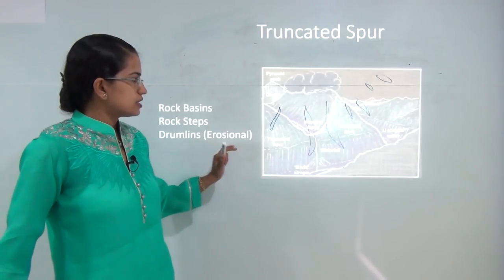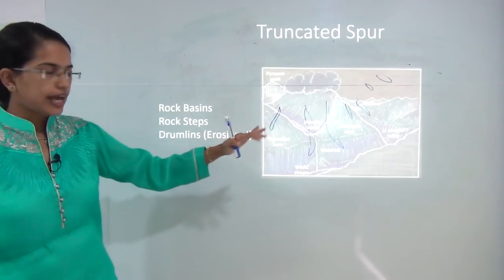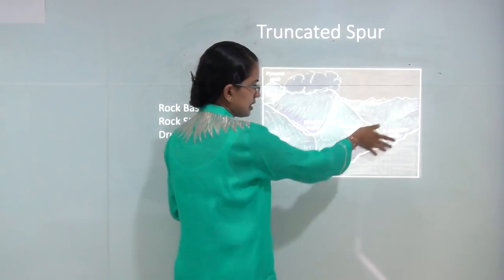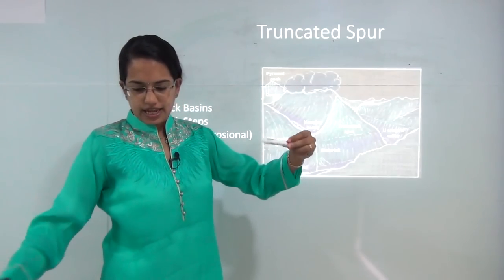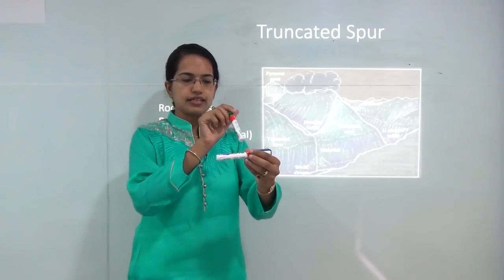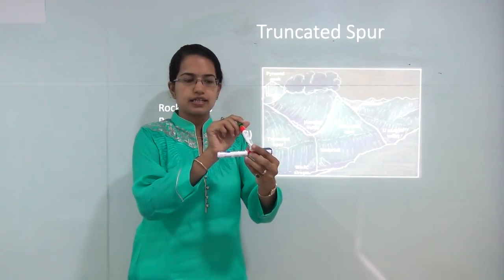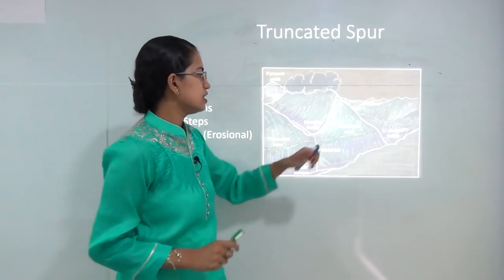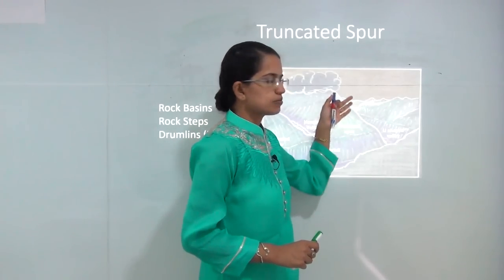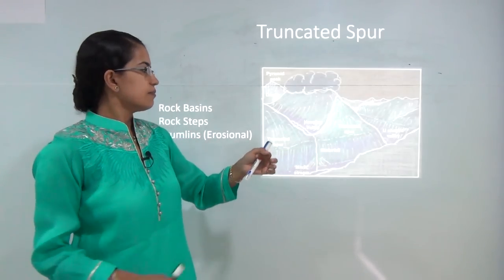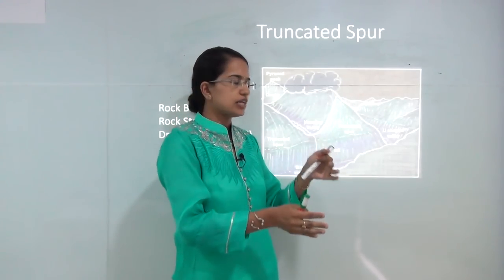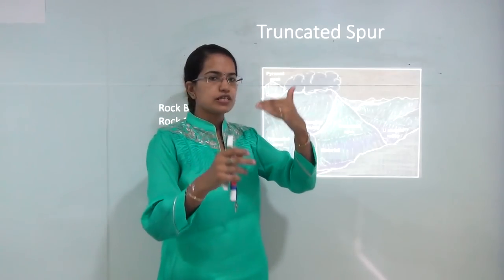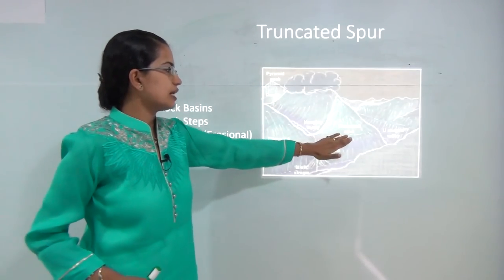Truncated spurs: the region where hanging valleys meet the main glacier. You have the main glacier flowing here, with hanging valleys or hanging glaciers dropping into the main glacier. The vertical walls that remain separated from this region are known as truncated spurs, because they are truncated or cut down due to the impact of the moving glacier but now stand apart and can obviously be seen in that region.